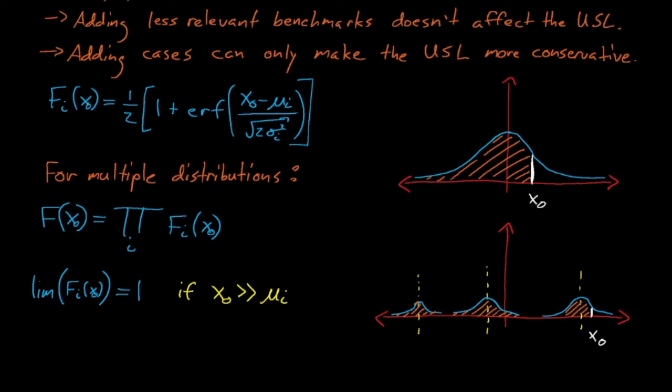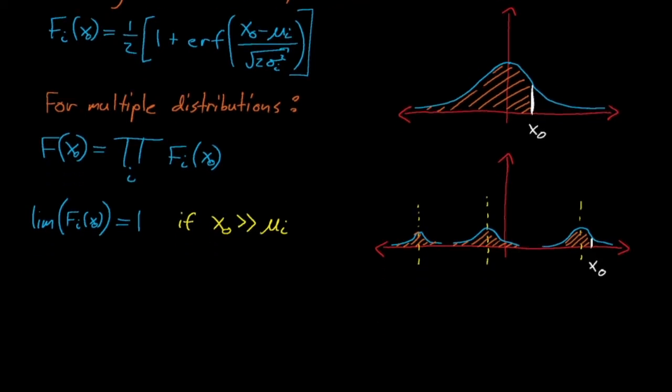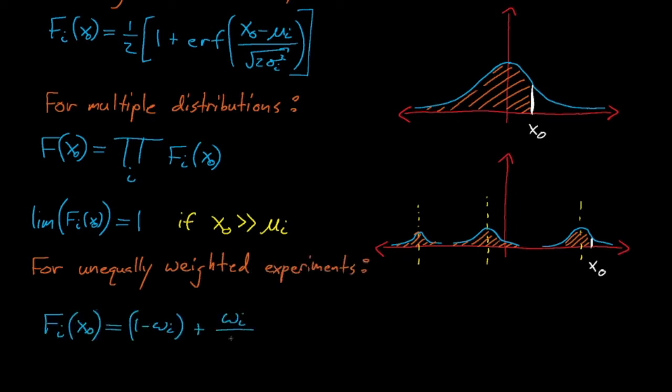And so we see that our overall F(x) function tends to be dictated by only the most extreme, farthest to the right bias distributions. If we want to tweak our math such that the bias distributions are weighted unequally, then our F sub i functions would be described by this expression.